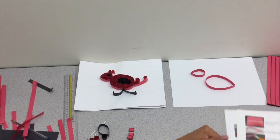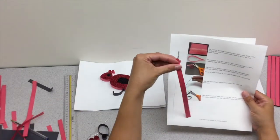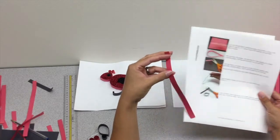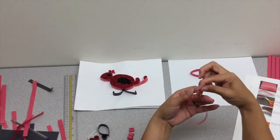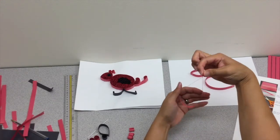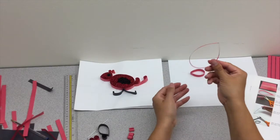The first step in creating your bird is to take a full-length strip, create a teardrop shape like so, and tape it on the end. That's this shape taped up.